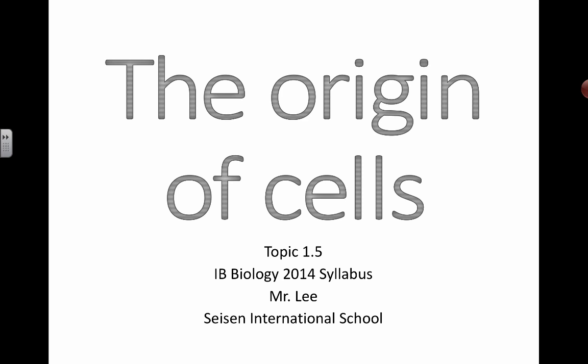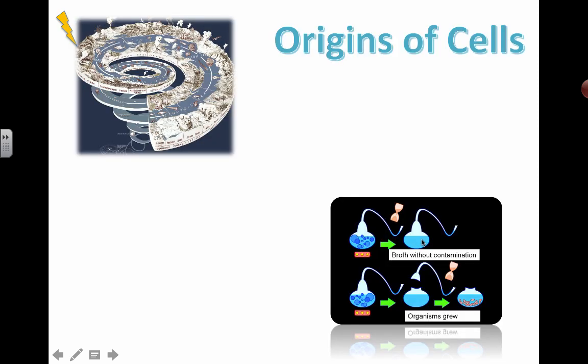We are going to take a look at the origin of cells. A long time ago in an old syllabus, this was in the special evolution section, but now it's actually part of the cell theory unit because it is quite important to think about. For basic cell theory, we all know that cells come from other cells — the smallest unit of life. But where do cells come from? There's not a lot of good answers to be found here, and it's still a big mystery in the world of biology.